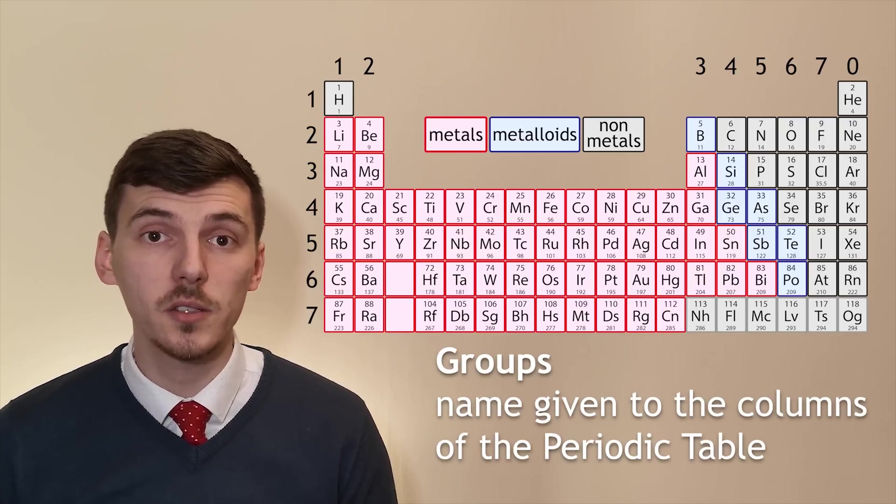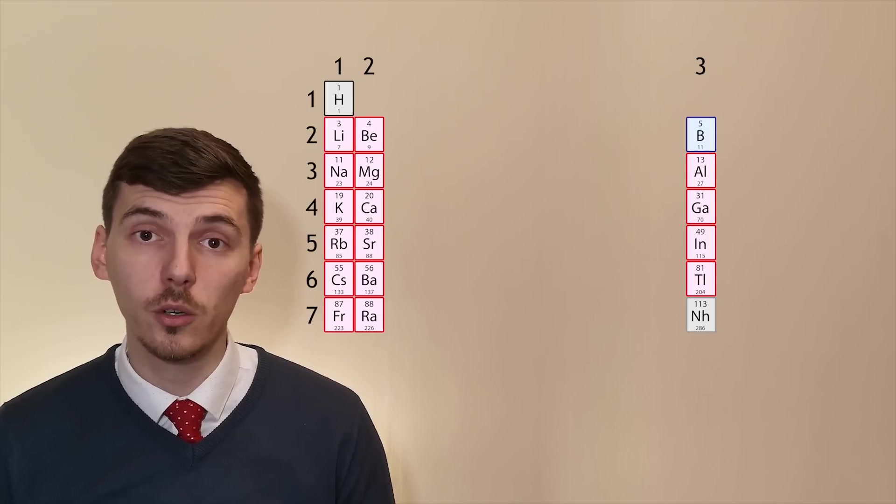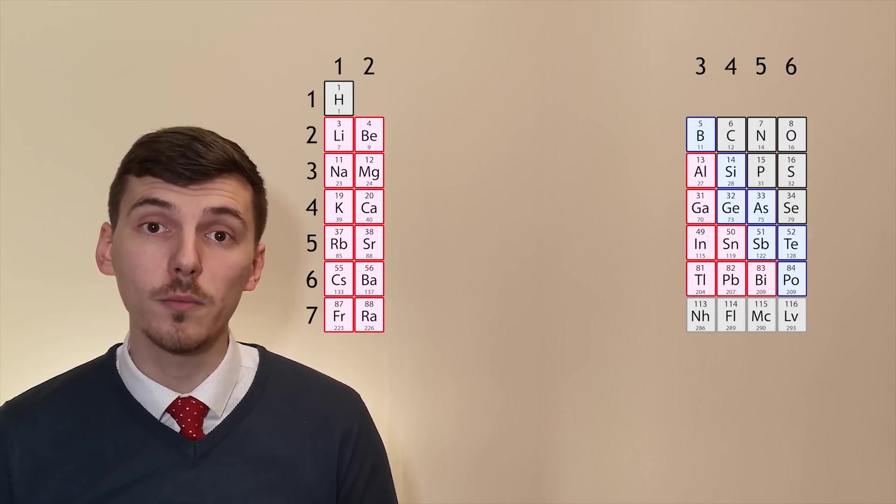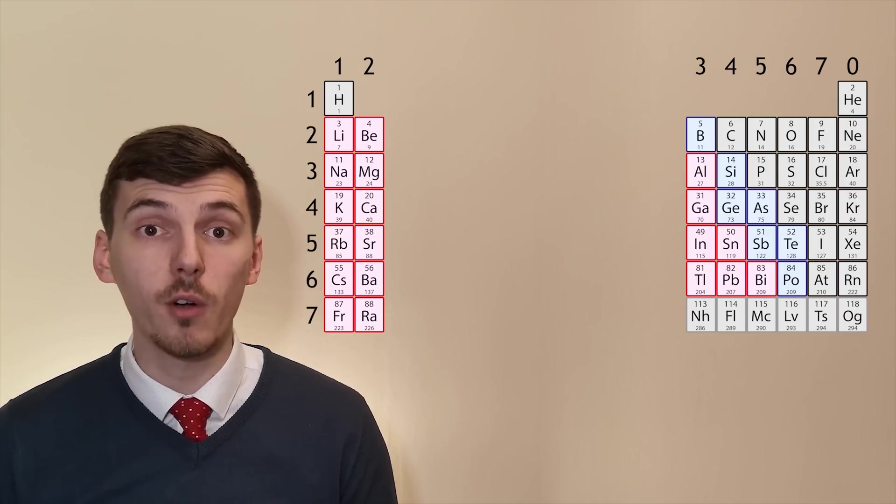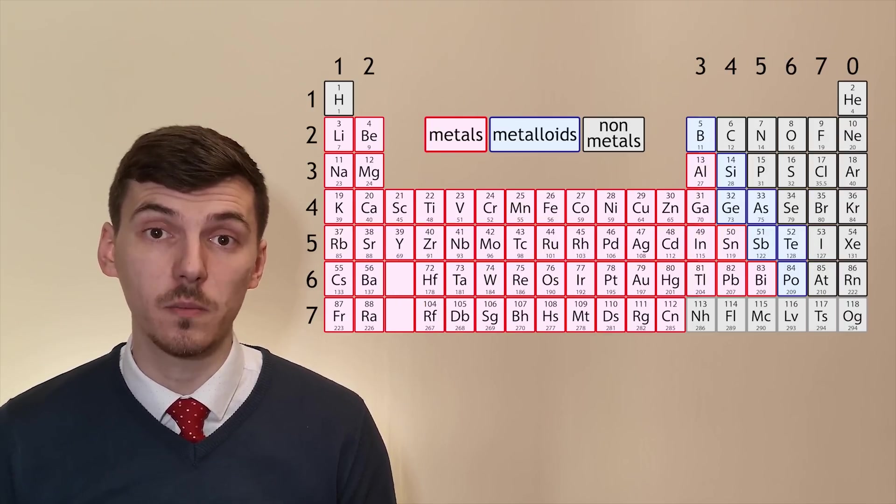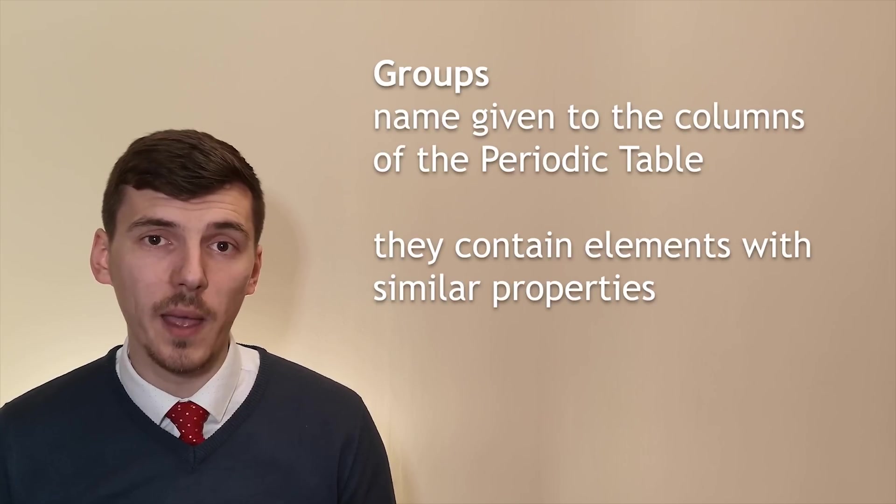There are nine main groups in the periodic table that you need to be able to recognize: group 1, group 2, group 3, group 4, group 5, group 6, group 7, group 0 and the transition metals. Within those groups you'll find patterns of properties.